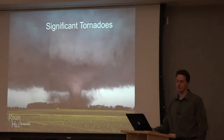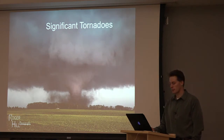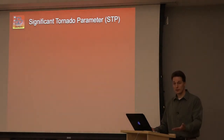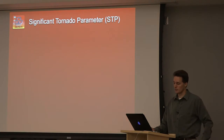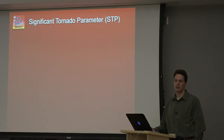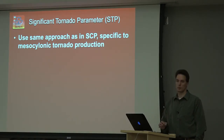Significant tornadoes are quite the threat to life and property, so anything we can do to properly anticipate these events with relatively low false alarm helps our credibility and gives people a chance to take proper action in advance. Much like with the supercell composite, we want some form of a conceptual model based on reality, but simple enough to calculate and apply on a daily basis. Like the SCP, we try to look at ingredients specific to mesocyclonic tornado production.